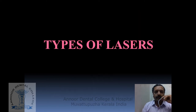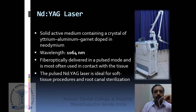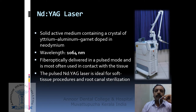Now let us see the different types of lasers commonly used in endodontics. First is the Nd:YAG laser, the first laser designed exclusively for dentistry. It has a solid active medium containing a crystal of yttrium aluminum garnet doped with neodymium. The wavelength is 1064 nanometers, corresponding to the infrared spectrum, so the laser beam is invisible. It is fiberoptically delivered in pulse mode and most often used in contact with the tissue. The pulsed Nd:YAG laser is ideal for soft tissue procedures and root canal sterilization, and can also be used for treatment of dental hypersensitivity and pulp capping procedures.